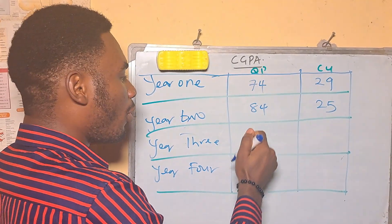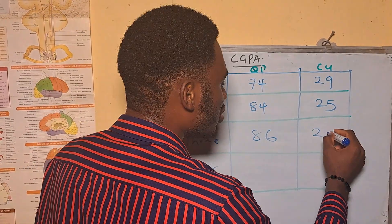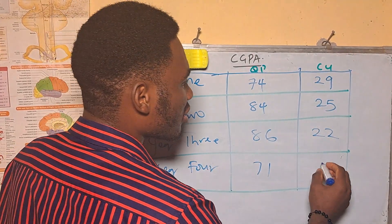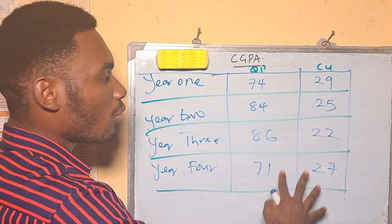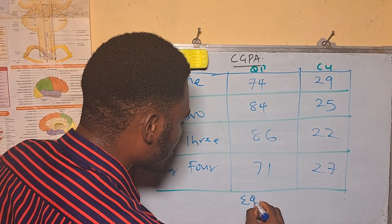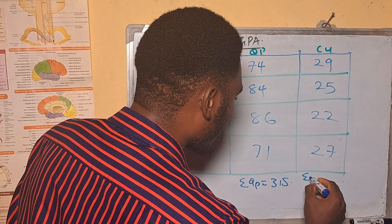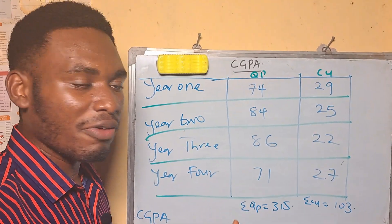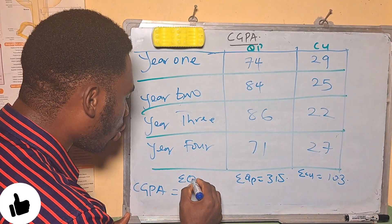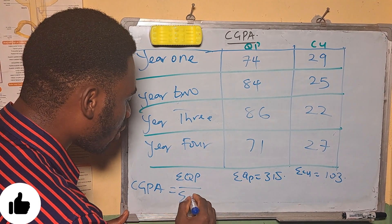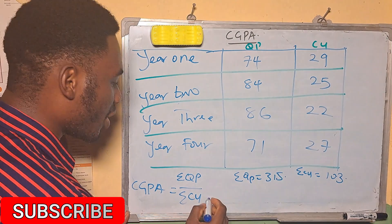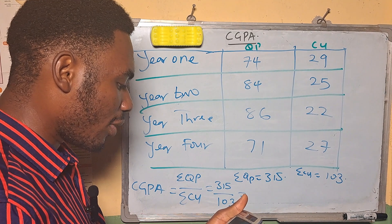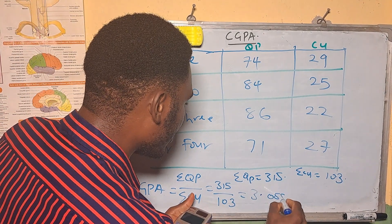In year three, total quality points were 86 and total credit units were 22. In year four (final year), quality points were 71 and total credit units were 27. Adding all quality points gives 315, and the summation of credit units for all four years gives 103. So CGPA for the four years is 315 divided by 103, which gives us 3.058.